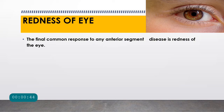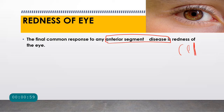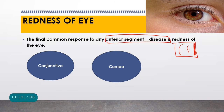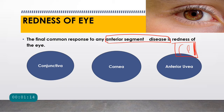What is meant by redness of the eye? Redness of the eye is actually the final common response to any anterior segment disease. The anterior segment includes the conjunctiva, cornea, iris, pupil, lens, up to the anterior vitreous. Problems in the conjunctiva, cornea, or anterior uvea can all cause redness of the eye.